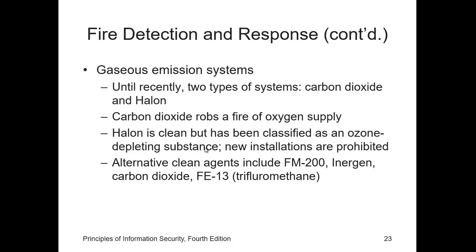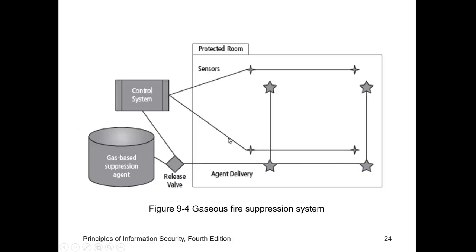Alternative clean agents include the FM-200, Energen, carbon dioxide, and Fe-13, which is trifluoromethane. This diagram explains how the gaseous fire suppression system works: sensors feed into the control system, which triggers the gas-based suppression agent to be spread through sprinklers dedicated for that gas.